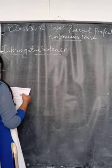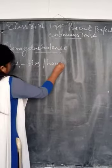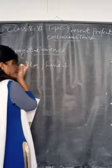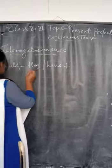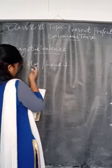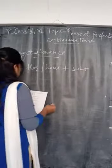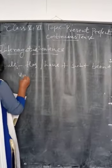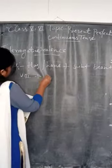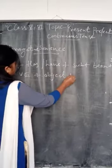Now let's look at the interrogative sentence structure. In the interrogative sentence, the helping verb comes first, then the subject. The rule is: Has or have, plus subject, plus been, plus present participle of the main verb, plus object, plus question mark. Interrogative sentences are of two types: yes or no questions, and WH-word questions starting with a question word.